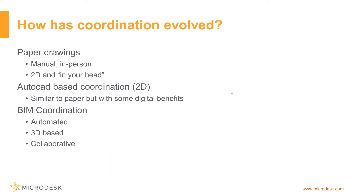We moved from that to an AutoCAD-type-based coordination — not all that different from paper-based, but digitized, with some of the benefits of being able to do this on a computer. You could update it quickly and view it on a computer screen. What we've moved into more recently is BIM coordination. This is where we really focus on the 3D elements of the model. When we talk about BIM — building information model — we're not so concerned about the information in this process. We want the building model; we want to see those 3D elements and how they're going to fit together. The BIM process helps us in that it's automated to an extent — the computer does the heavy lifting of identifying clashes and interference points for us.